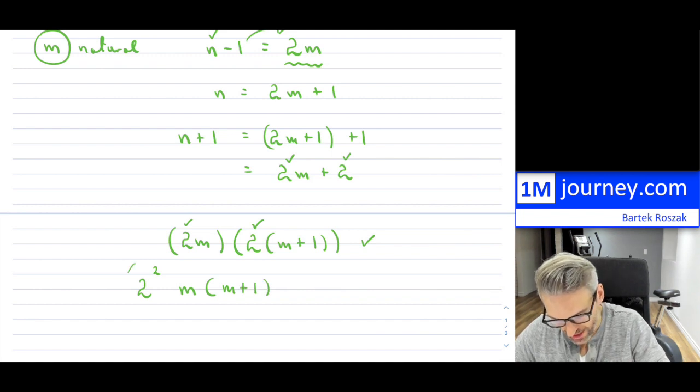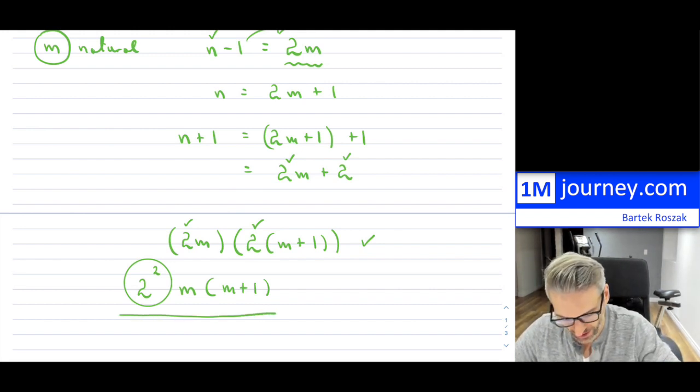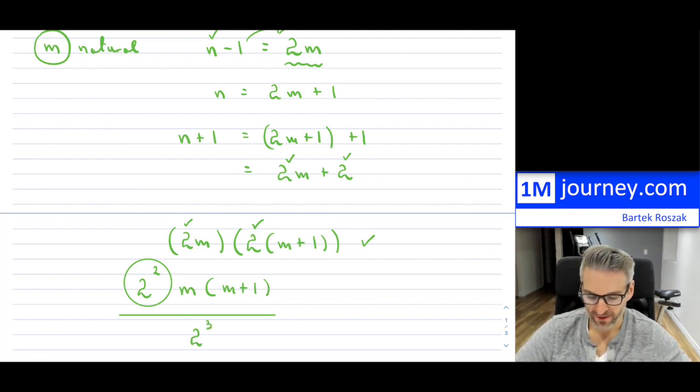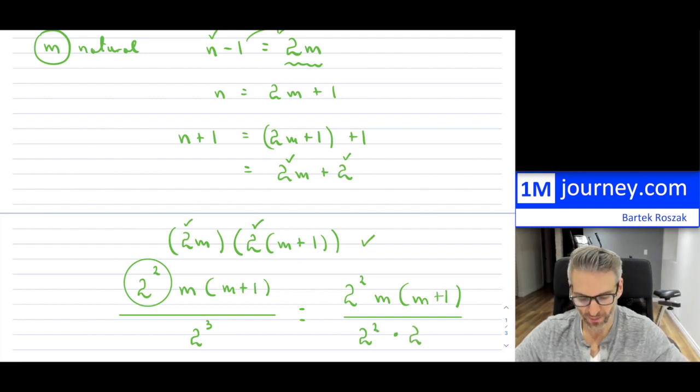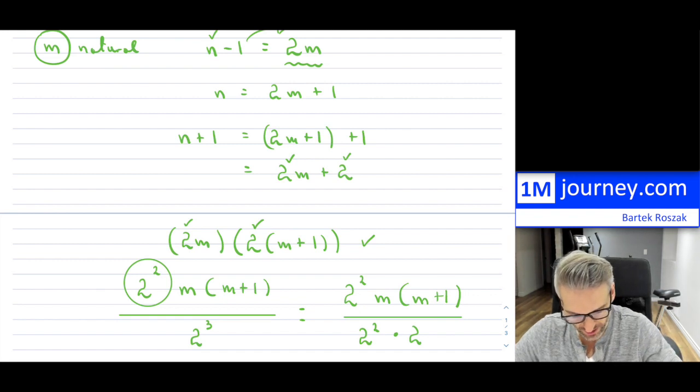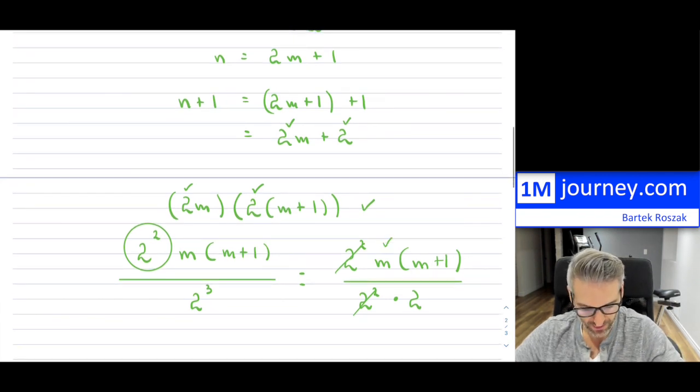So now, 2 squared is 4, correct? And my ultimate goal is, is this whole thing divisible by 8? But 8 is nothing else but 2 times 2 times 2, which is 2 cubed, right? That's what we have. So really, this is now 2 squared, m, m plus 1. And then here in the denominator, this is 2 squared times 2, which is just 2 cubed or just equal to 8. So clearly, these 2 will cancel. So it's certainly divisible by 4. And now the question is, is m multiplied by m plus 1 divisible by 2?